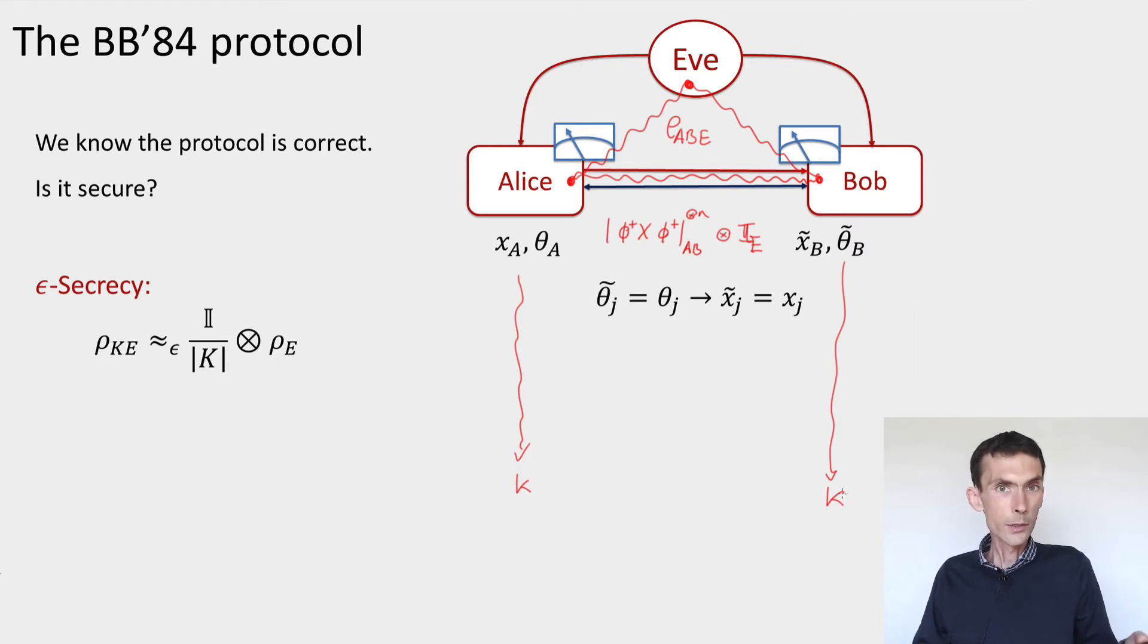Correctness is okay. What we want to do is prove security or secrecy. The criterion for ε-secrecy requires that the joint state of the key and the eavesdropper's side information should be indistinguishable, as measured by the trace distance, from a state that's totally uniform on the key register and uncorrelated from the eavesdropper's side information. That's our goal.